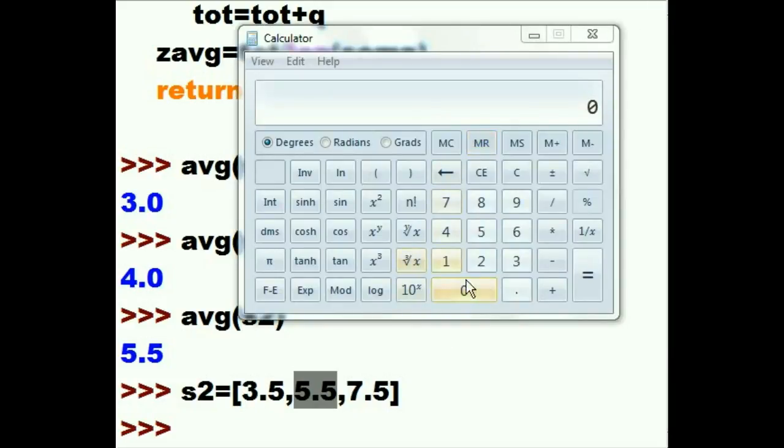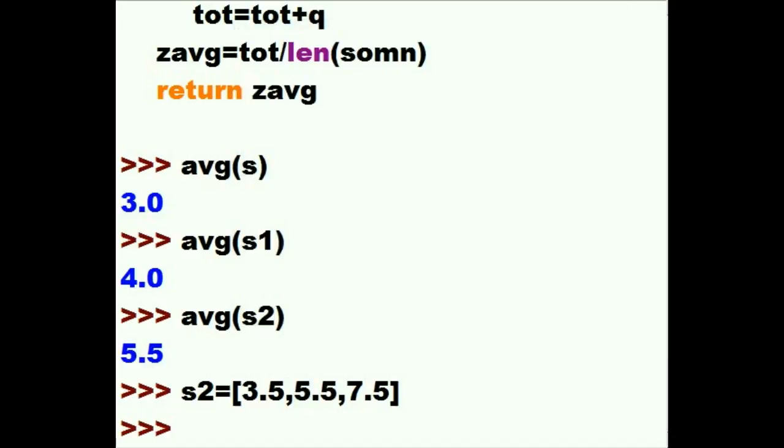Well, how does it work out that way? Let's find out. Let's make sure this is clear. 3.5 plus 5.5 plus 7.5 equals 16.5. Now, I divide that by 3 and I get 5.5. There he is.